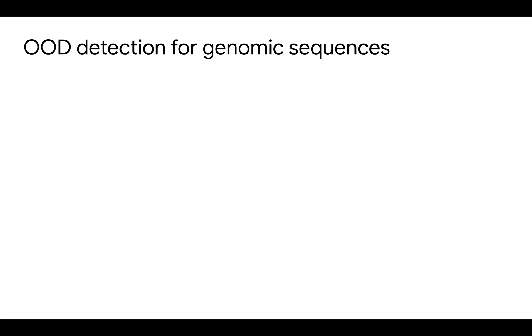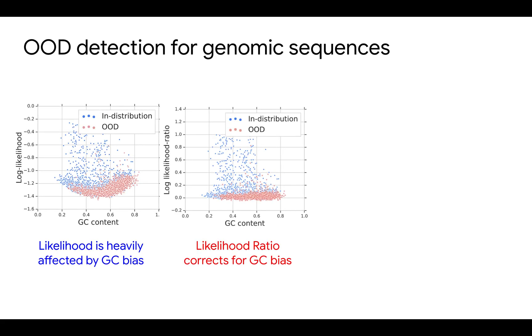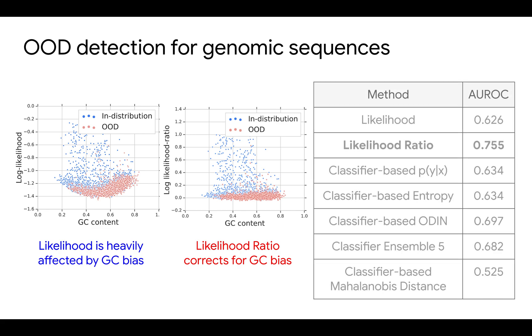Applying our method to the genomic dataset, we found the likelihood ratio corrects for the background GC bias and achieves state-of-the-art performance.